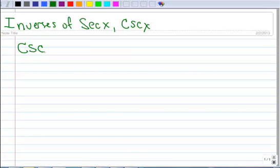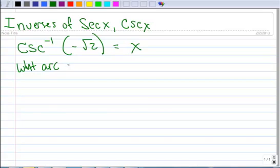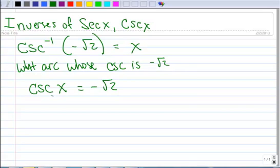If I've got the inverse cosecant of negative square root of 2, what this says is what arc or what is the arc whose cosecant is negative square root of 2. So, I could rewrite that in a function notation, like this. Okay, so there's some arc whose cosecant is negative square root of 2.